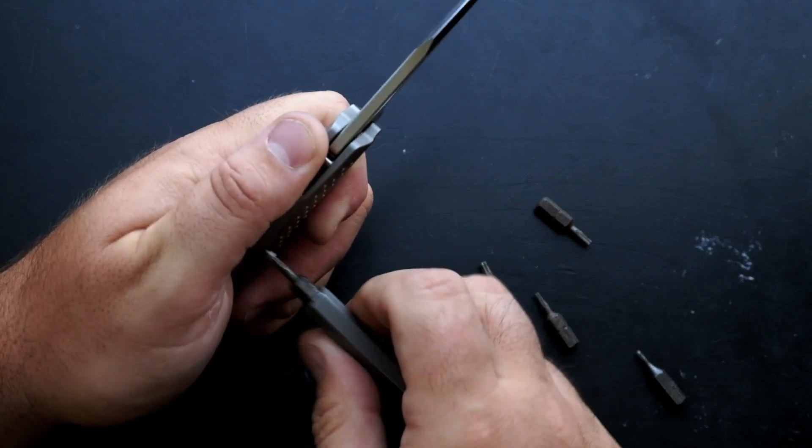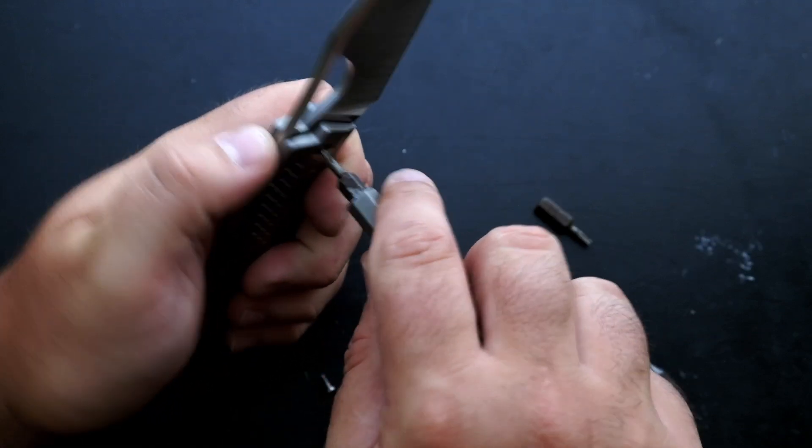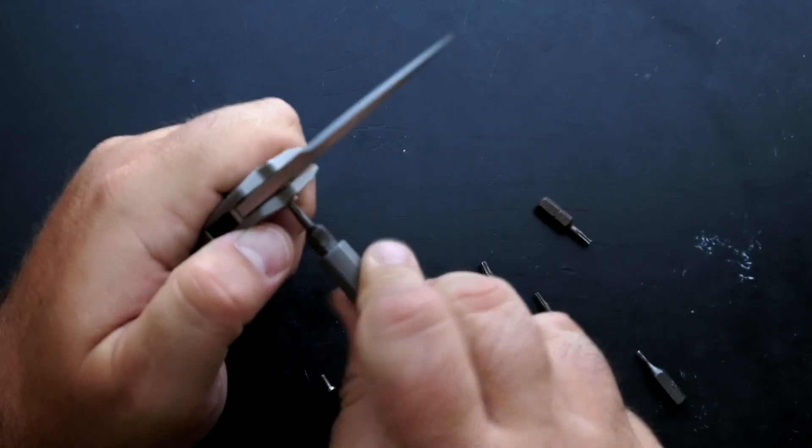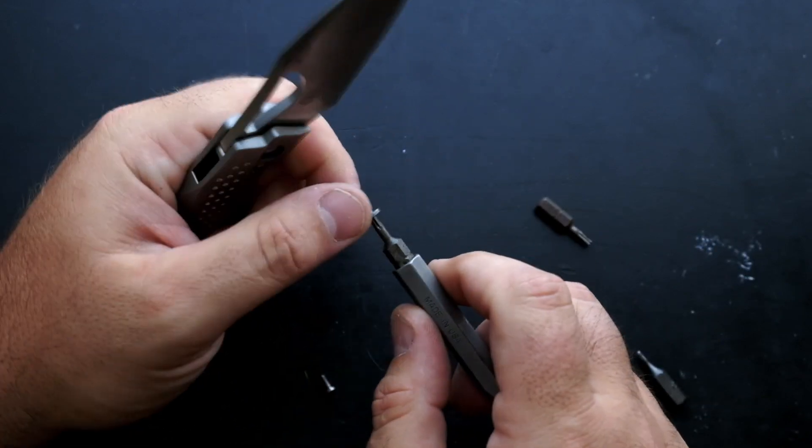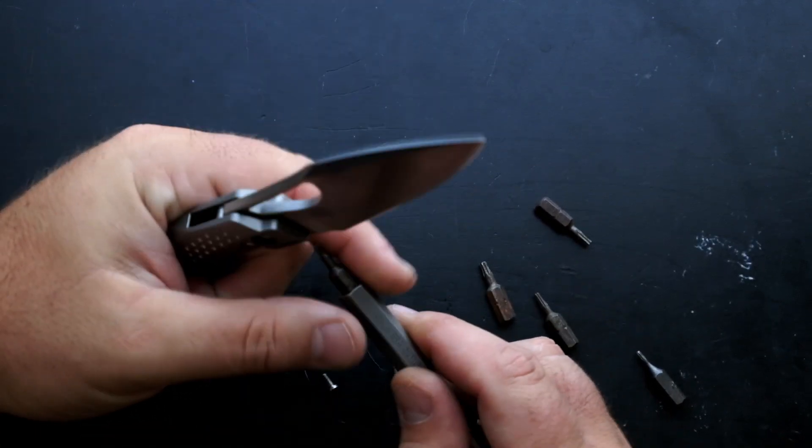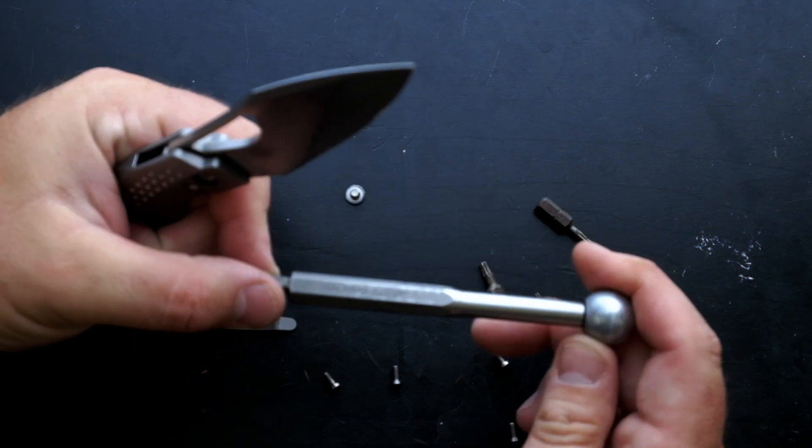So this is a T8. There's only two body screws and then you have your pivot. If you are wondering, I use a Calavera Cutlery driver. Jeremy Robertson machines these himself and it's got a free spinning head on it. I love this thing.